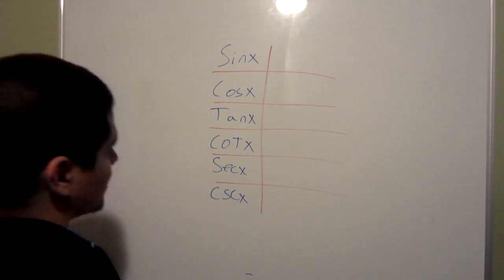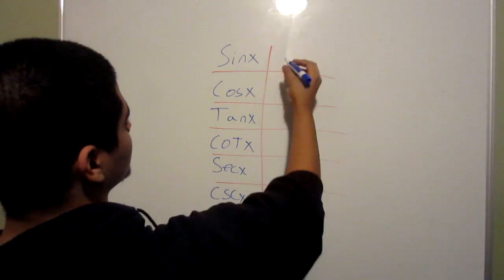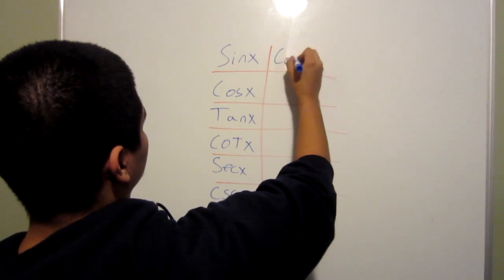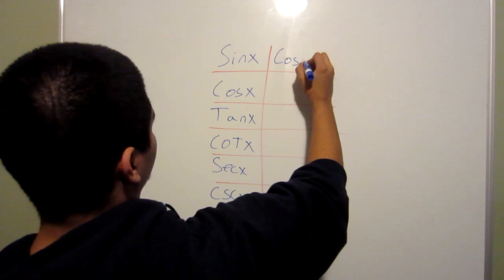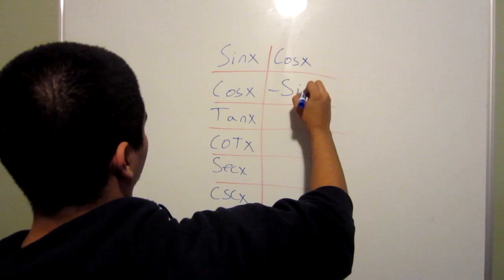Now in order to know these, the first two are given to you at the start, so you know that the derivative of sine x is cosine x, the derivative of cosine x is negative sine x.